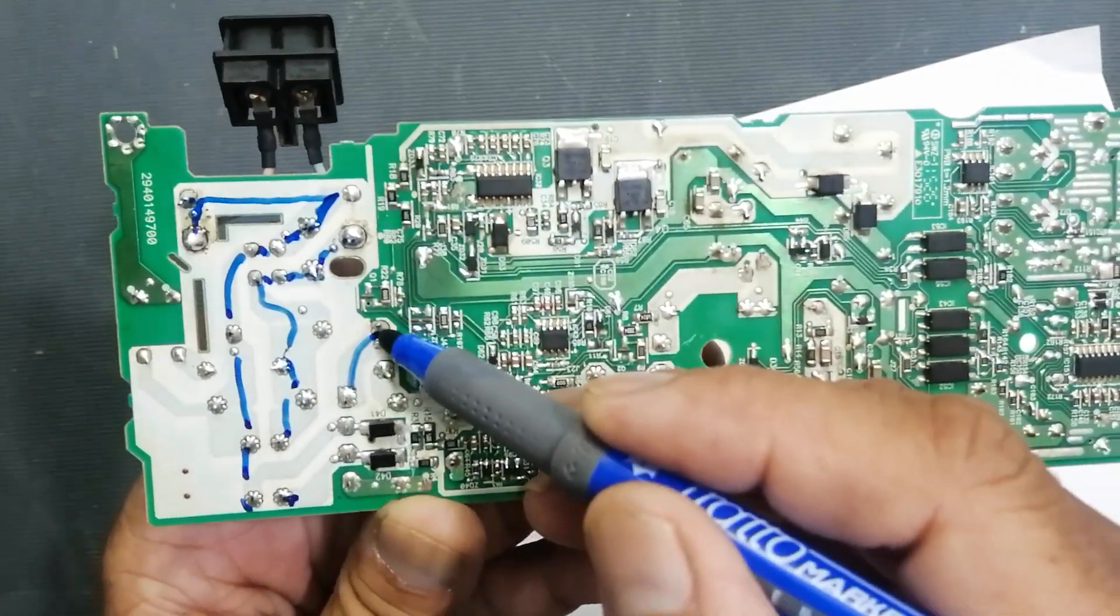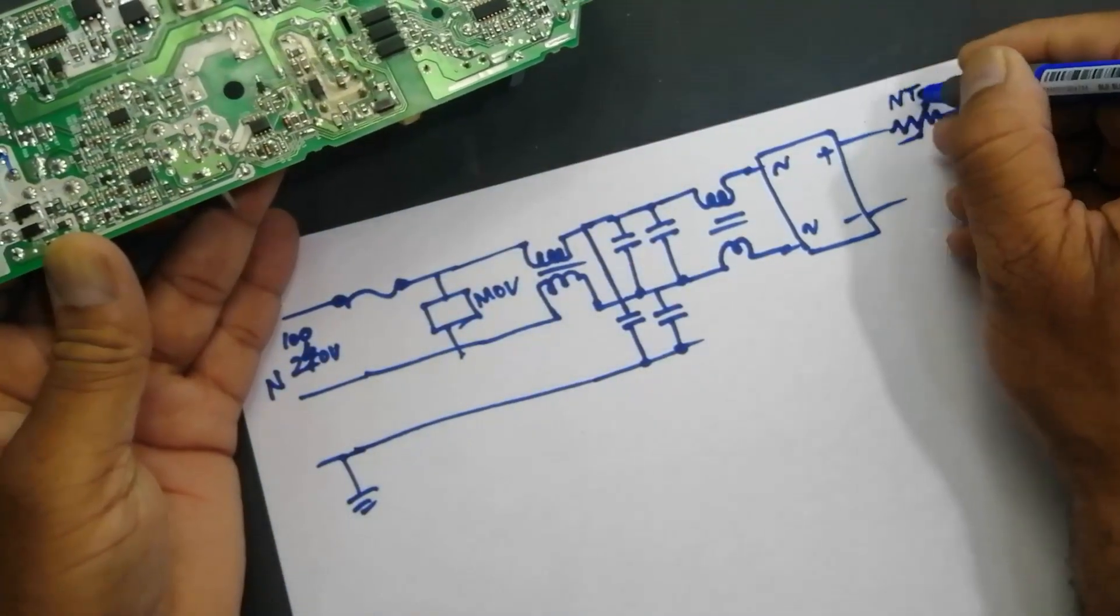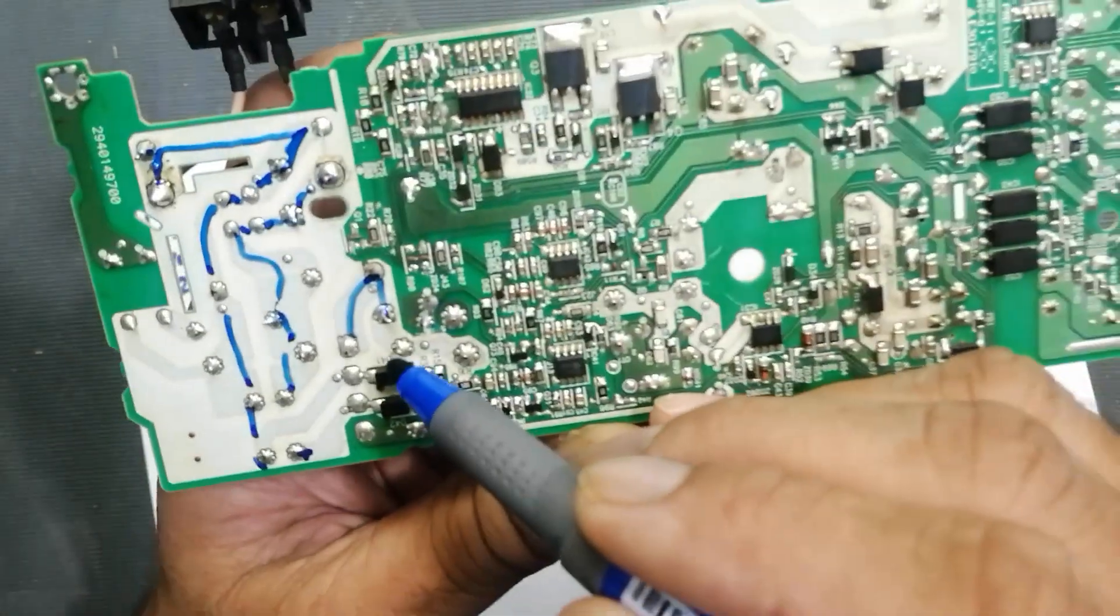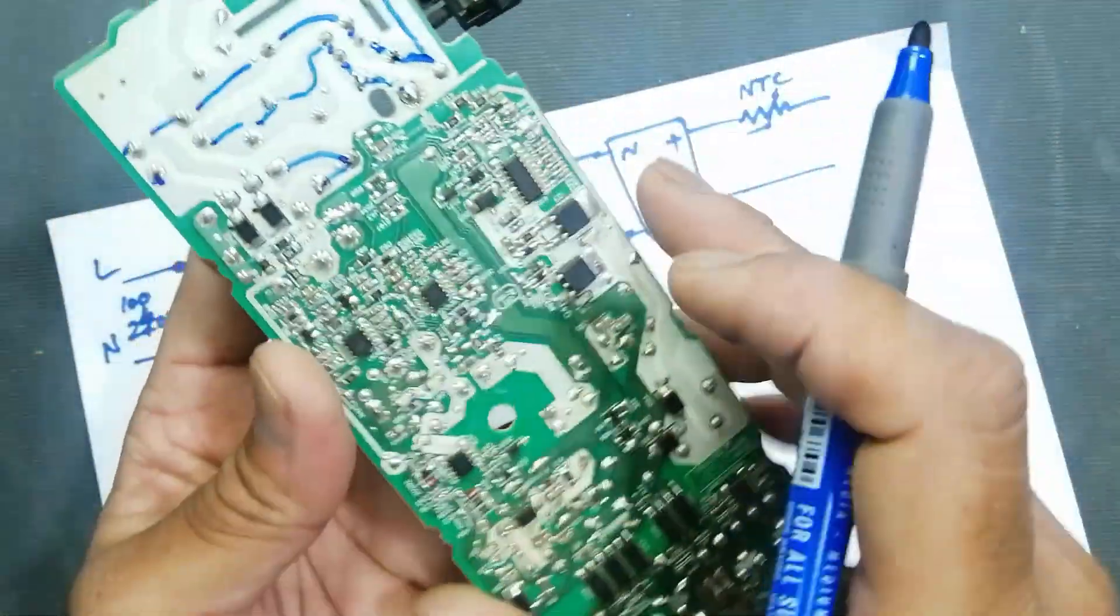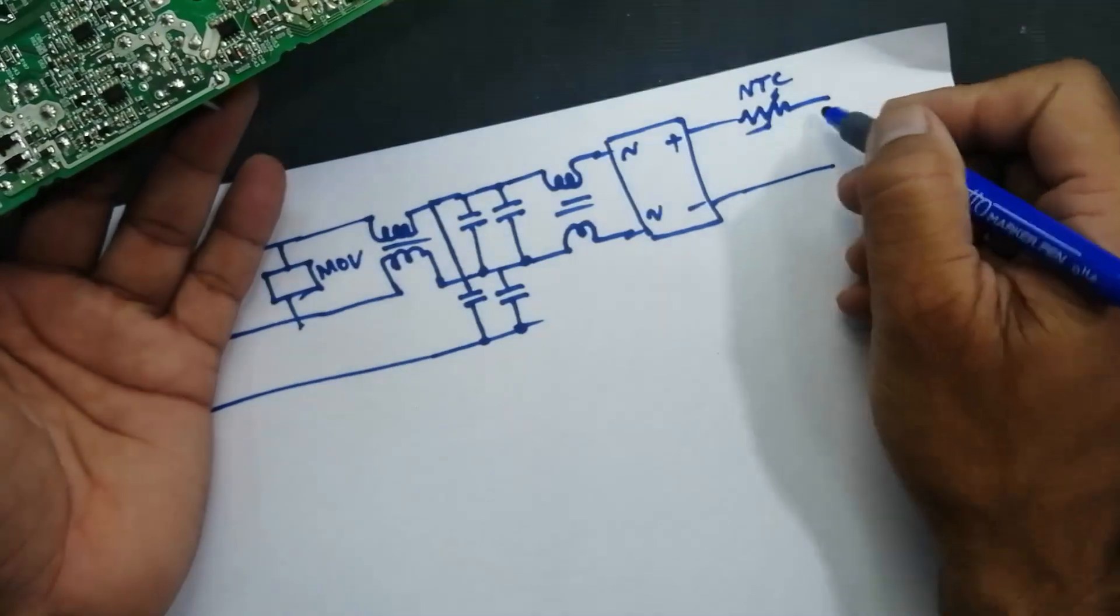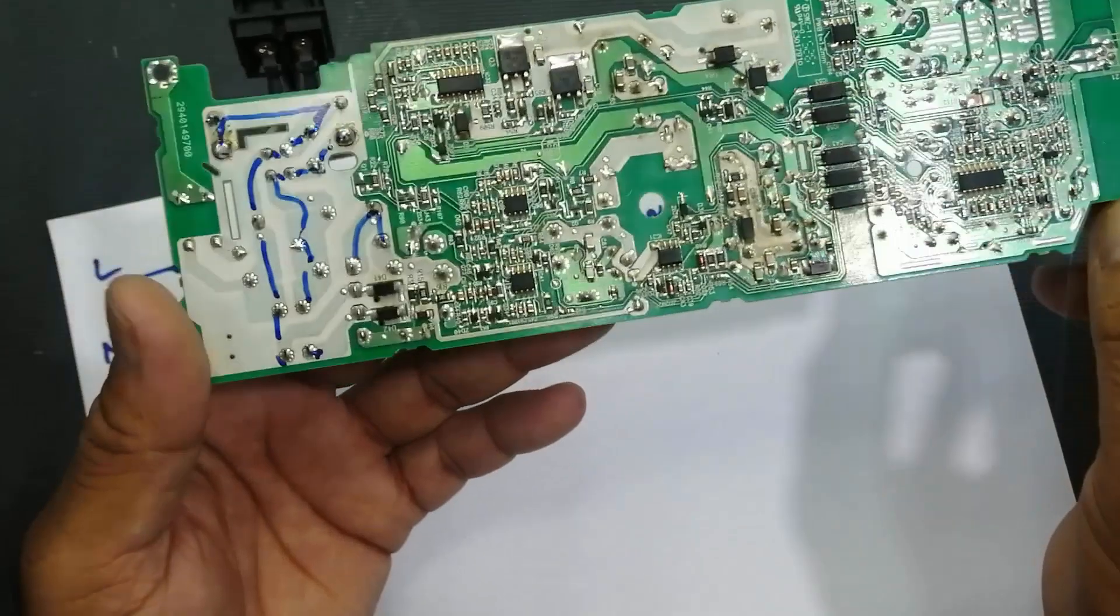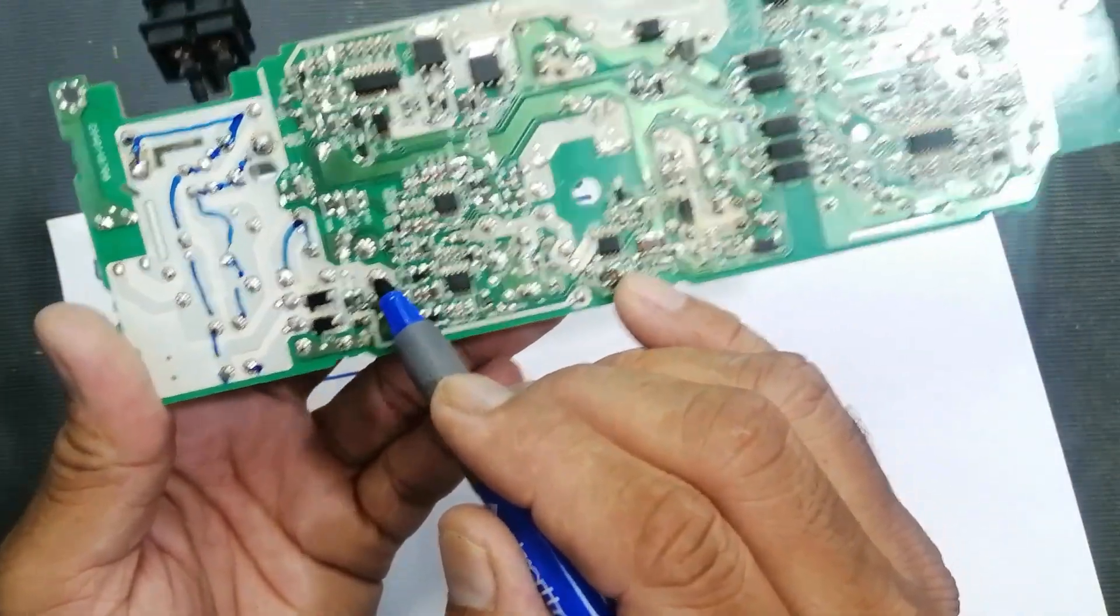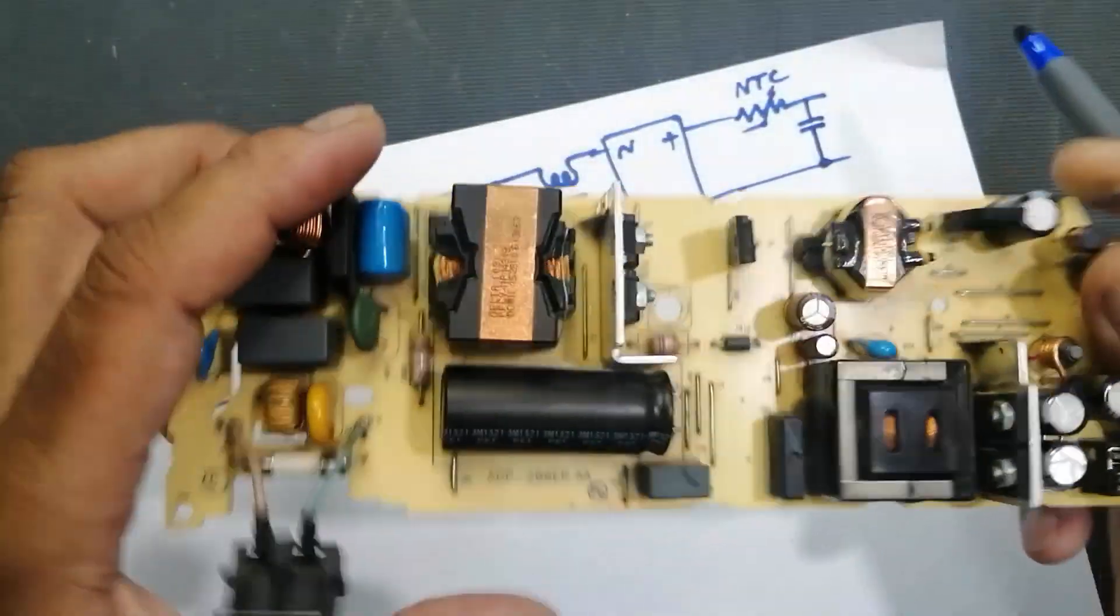So positive side is connected here from this point to this point. Here we have NTC, come to this point, this NTC comes to this point. Here we have our filter capacitor connected between positive and negative line. Then this positive voltage will come here at this point to this point from this inductor, this PFC choke.